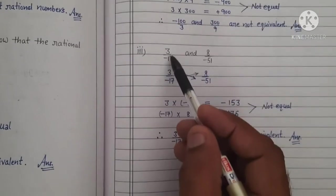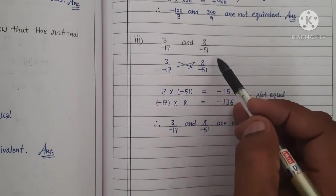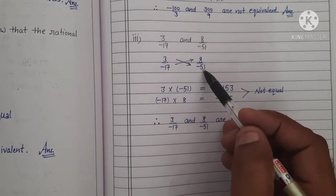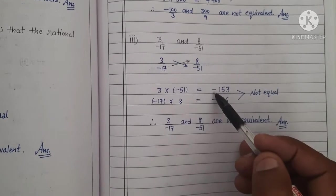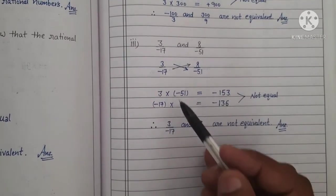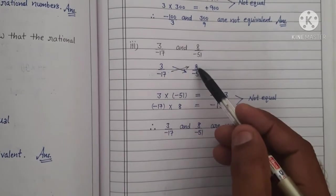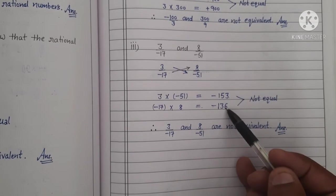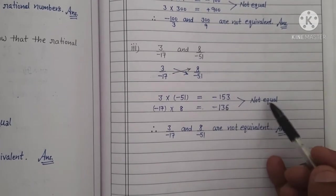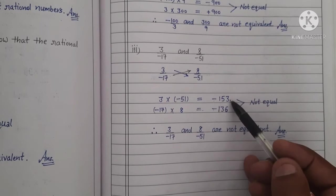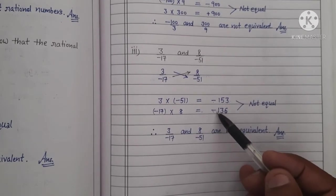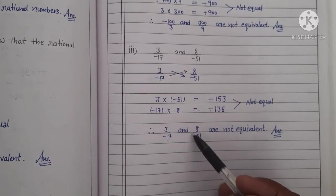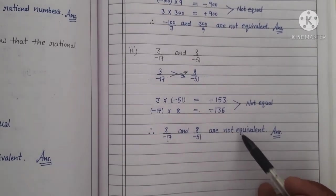Part 3: 3 upon minus 17 and 8 upon minus 51. Cross multiplication karenge — 3 ki minus 51 ke saath, answer rahega minus 153. Similarly, minus 17 ko 8 ke saath — answer rahega minus 136. Both values are not equal — that is minus 153 and minus 136. Therefore, 3 upon minus 17 and 8 upon minus 51 are not equivalent.